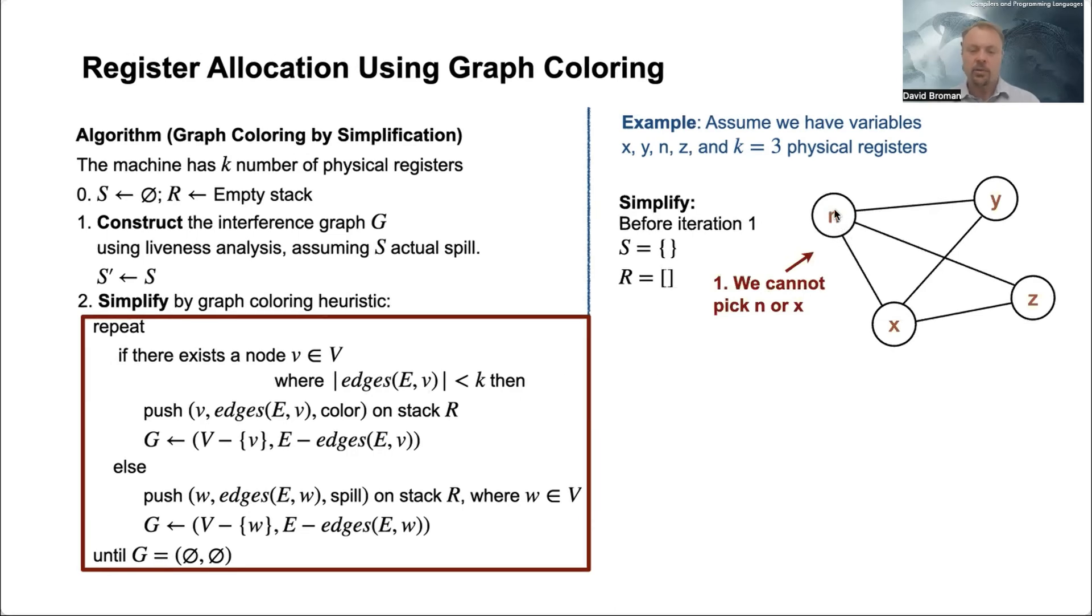But k is three, so three is not strictly less than k. So we cannot pick n, we cannot pick x. But we can pick y or z because they have two outgoing edges, which are less than k.